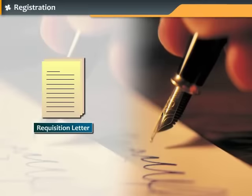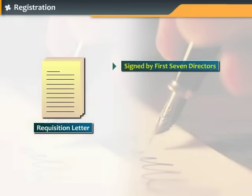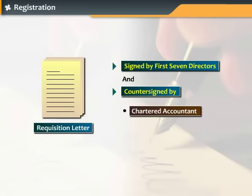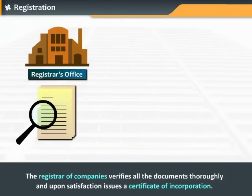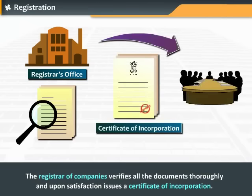All the documents must be duly signed by the first seven directors and countersigned by either a chartered accountant or a practicing Supreme Court advocate. The registrar of companies verifies all the documents thoroughly and, upon satisfaction, issues a certificate of incorporation.